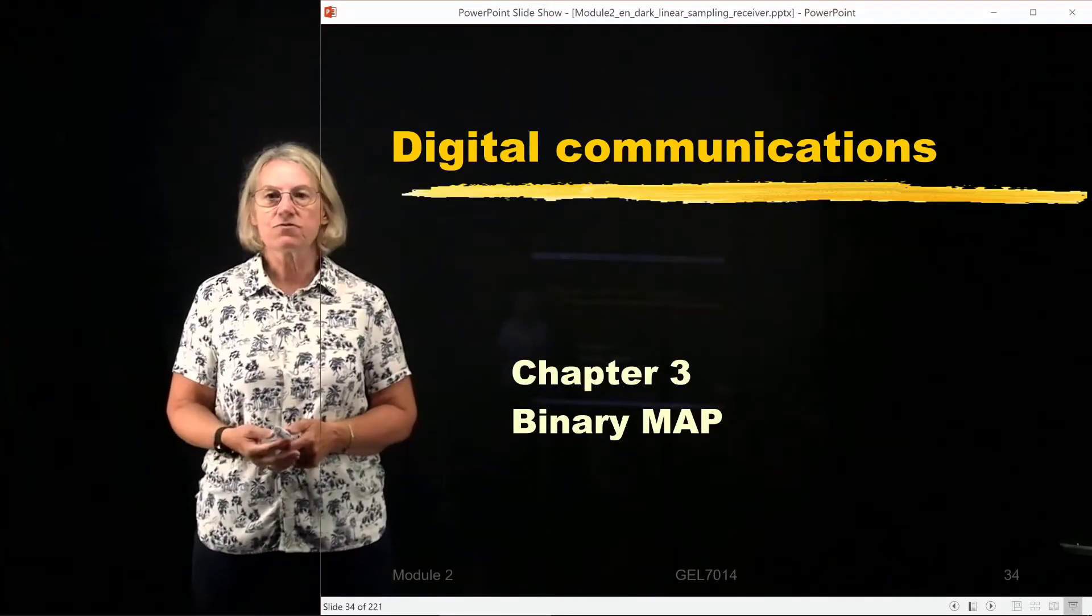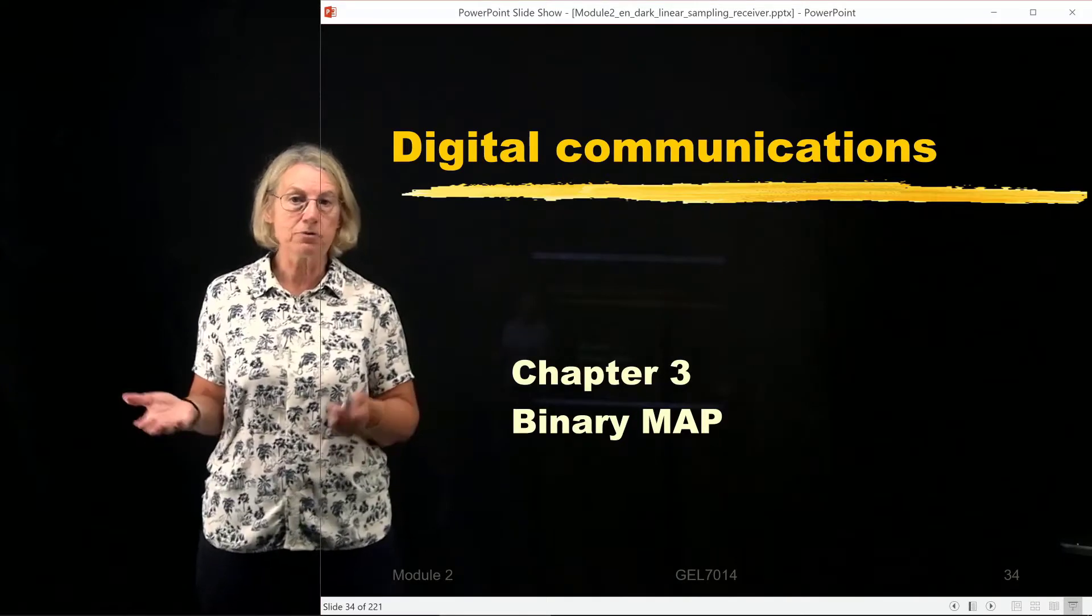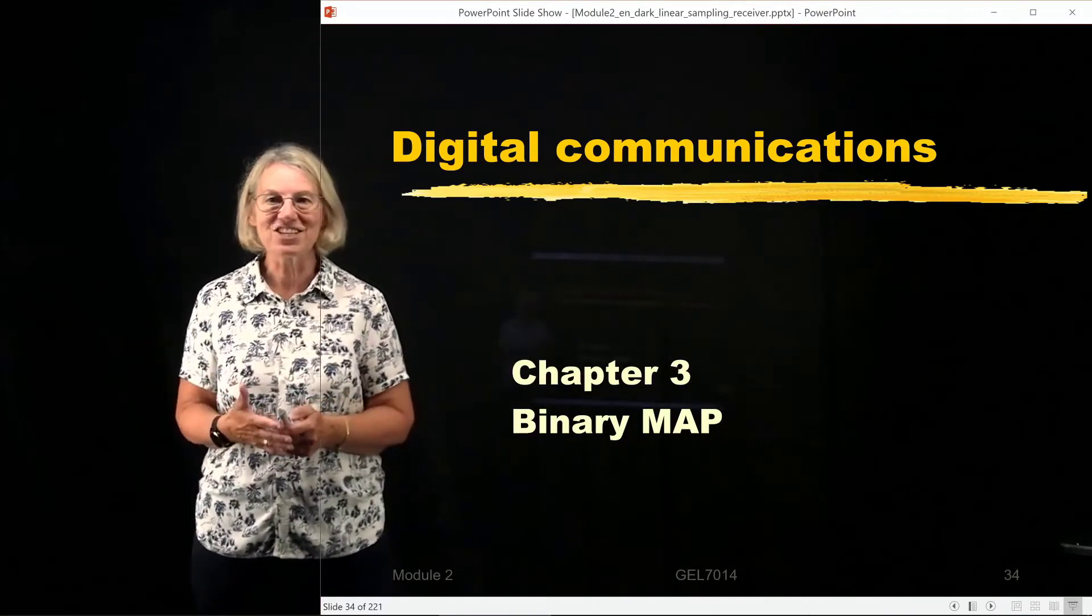So we've completed the analysis for the maximum likelihood receiver. Let's do the same thing for the maximum a posteriori probability estimate. How does that change?